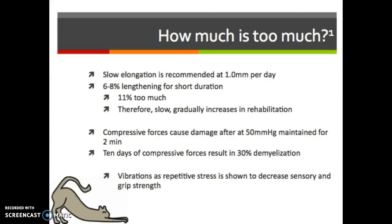Physical stresses that are extreme will cause nerve death. So how much is too much? Literature states that slow elongation is recommended — about one millimeter a day — and 6% to 8% of lengthening over a short duration is healthy. An 11% increase is just too much. Therefore, slow and gradually increasing rehabilitation is going to be the key, especially when injured, because that stress sensitivity means the nerve can't adapt as quickly.